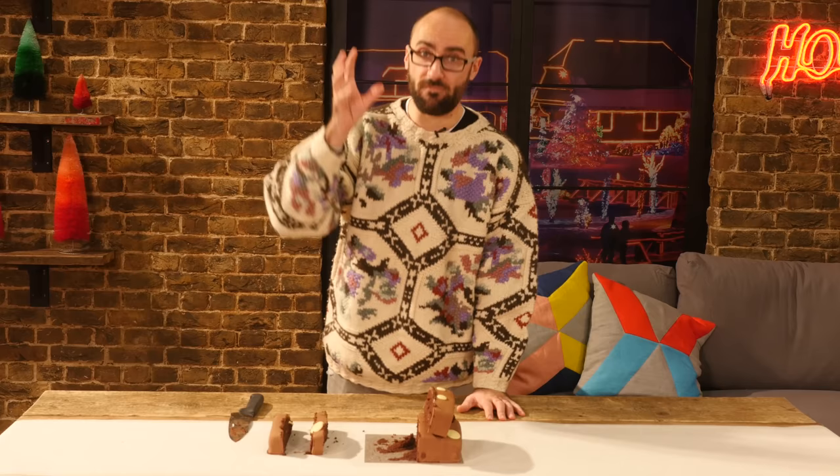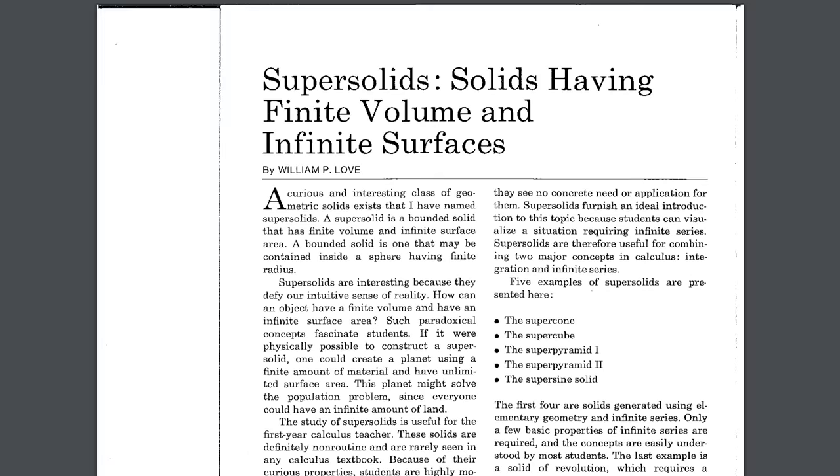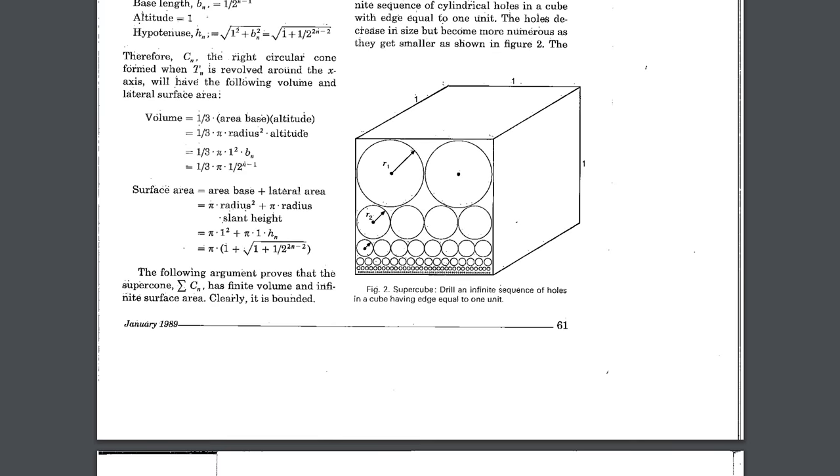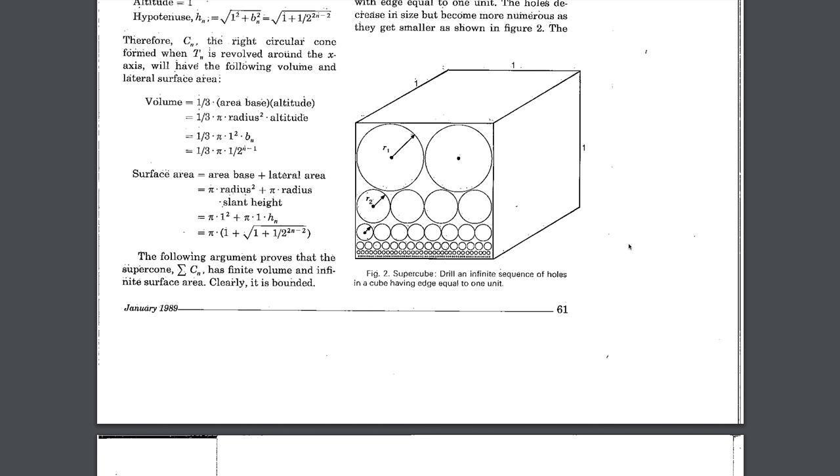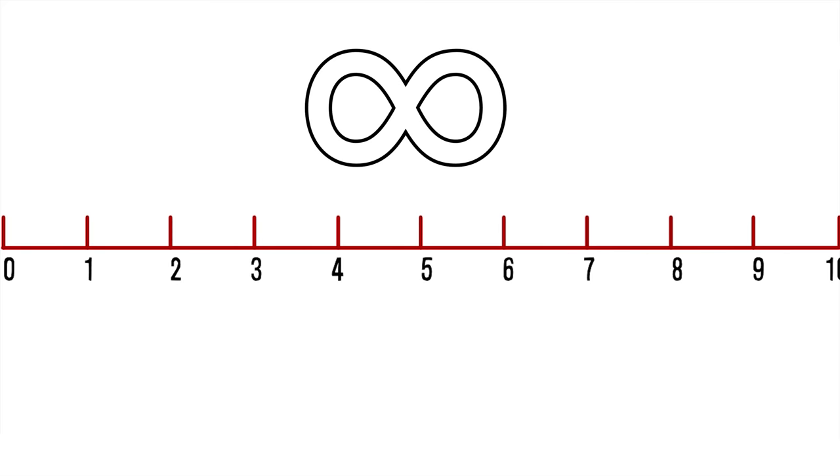It's a cake you can eat, but not frost. You would need an infinite amount of frosting to cover the whole thing with a uniform coat. An object with finite volume but infinite surface area doesn't need to be endlessly tall, by the way. There are bounded super solids, like this cube with an infinite number of smaller and smaller circular holes. Of course, building these objects in the real world comes with some obvious difficulties.